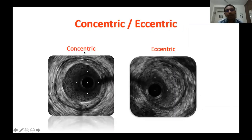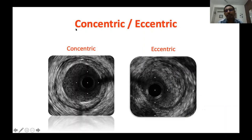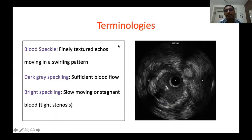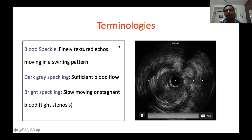Plaque can accumulate concentrically — going around the full circumference of the vessel — or eccentrically, affecting only part of the circumference. Here is an example of a concentric plaque and here is an example of an eccentric plaque. We need to understand some terminologies before going into image interpretation.